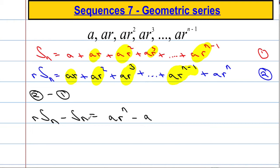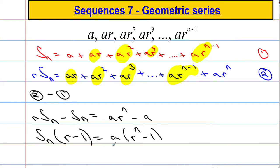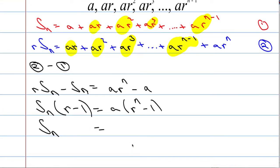Everything disappears with the exception of AR to the n and A. Now the left-hand side of this equation, I'm going to factorize out that S of n, take out the S of n, and that leaves me with R minus 1. And then over here I'm going to factor out the A as well, and we're going to get R to the power of n minus 1. I'm going to have A times R to the power of n minus 1 divided by R minus 1.